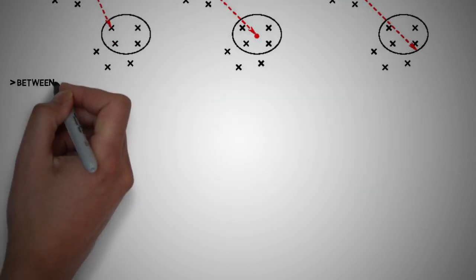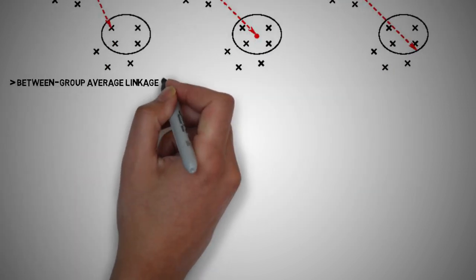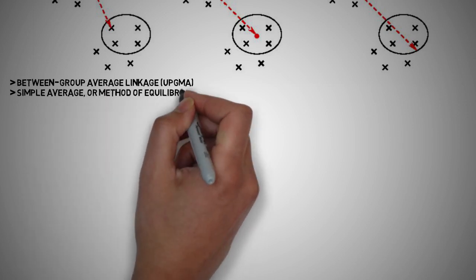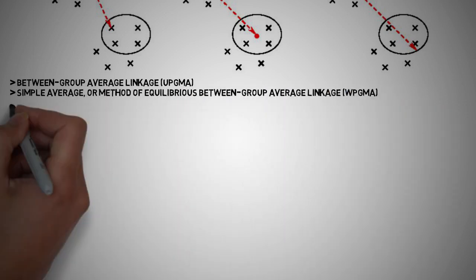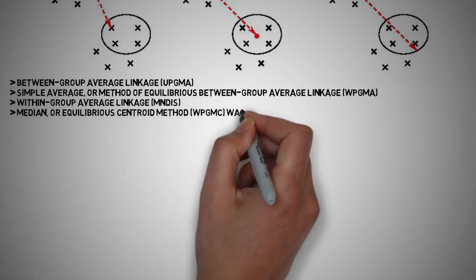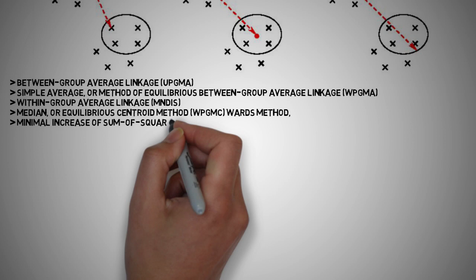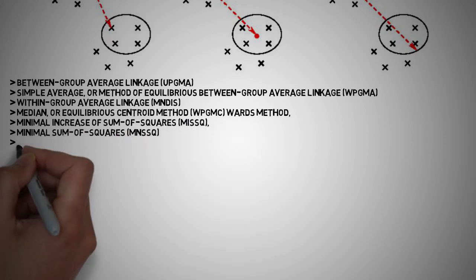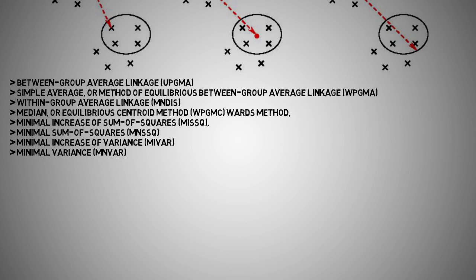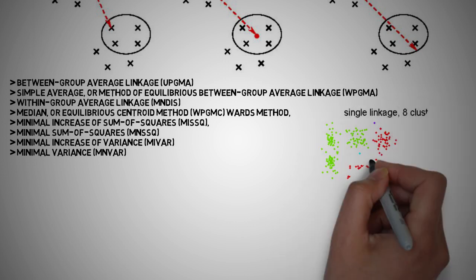There are other linkage methods such as between group average linkage, simple average method, within group average linkage, median or Ward's method, minimal increase of sum of squares, minimal sum of squares, minimal increase of variance, and minimal variance. Phew! Sounds a lot. Why is this important?